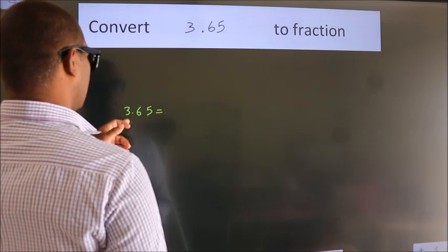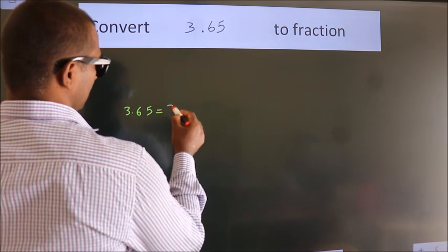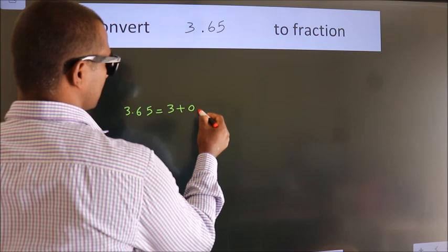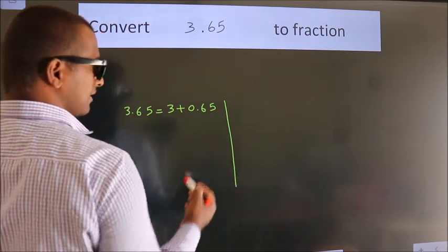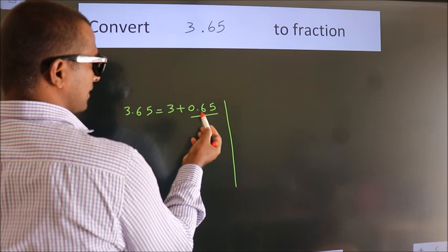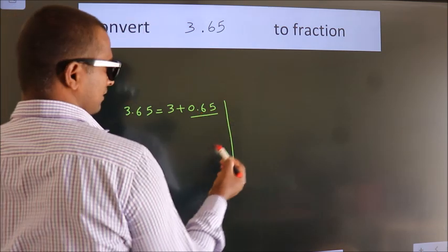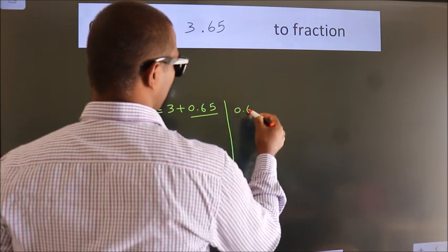First we should break this into 3 plus 0.65. Next, convert this to fraction over here. So 0.65.